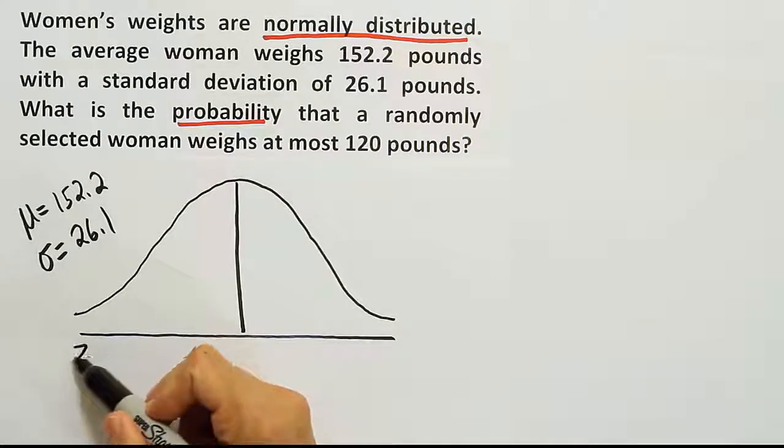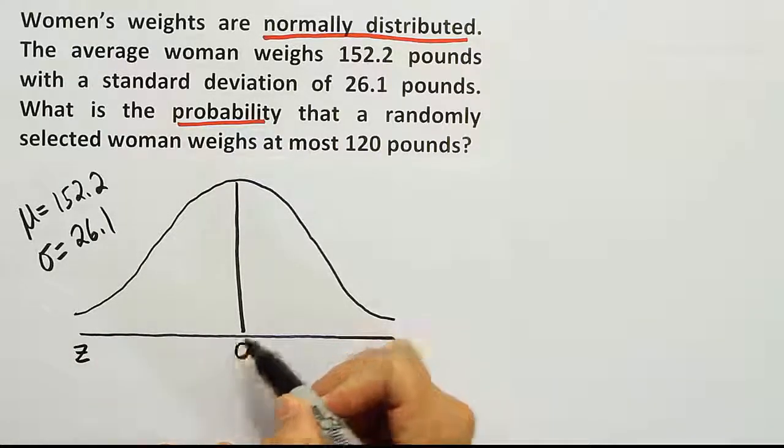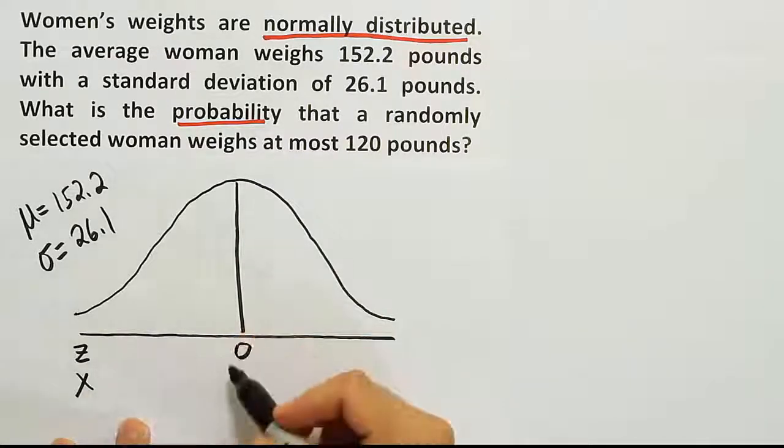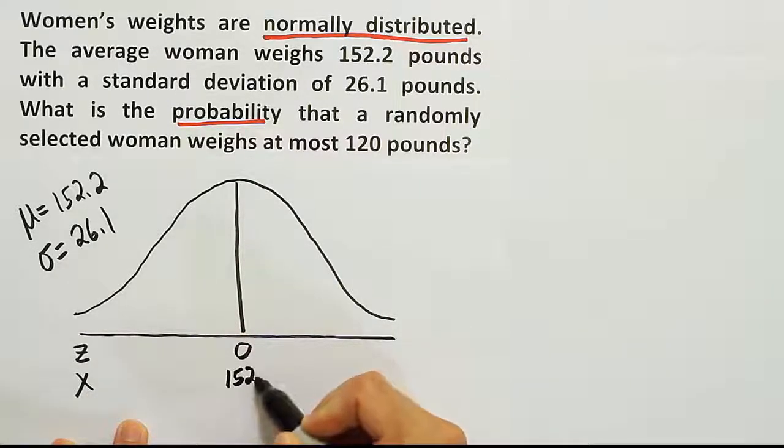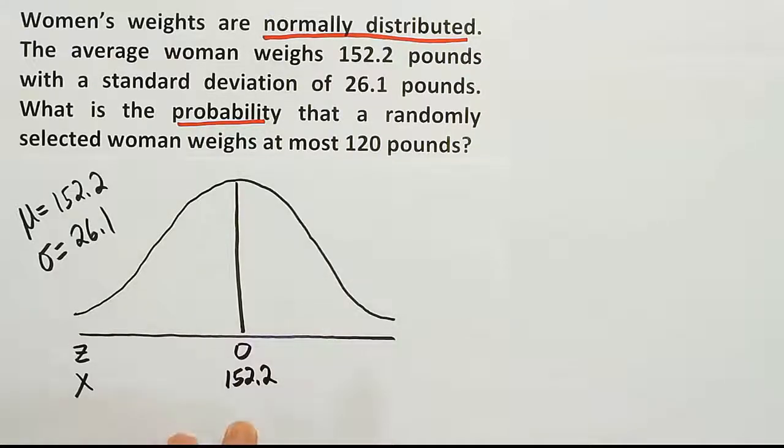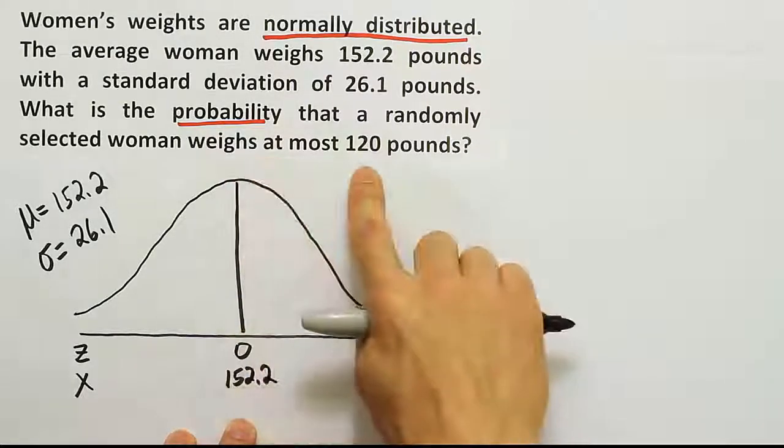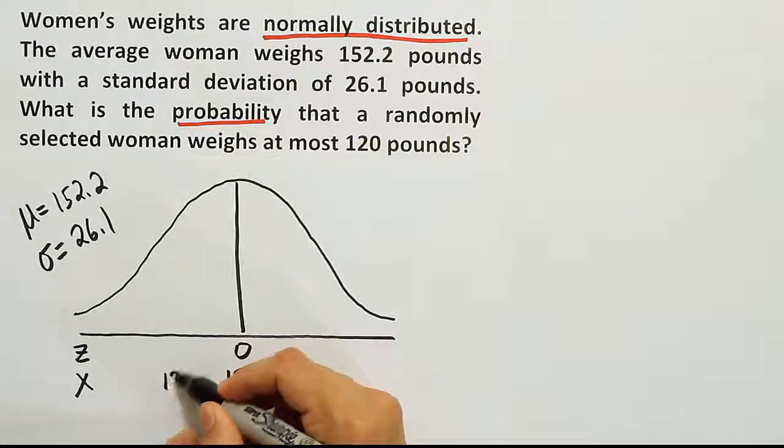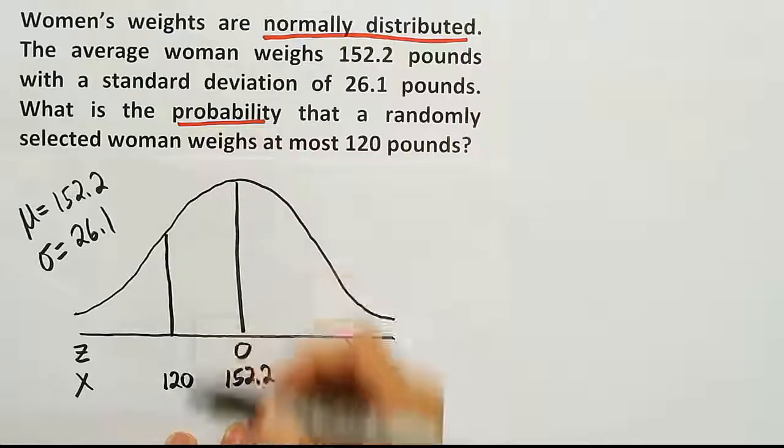The standard deviation is 26.1 pounds. The z-axis here is centered at zero. The x-axis represents women's weights, with average weight 152.2. They're asking for the probability that a woman weighs at most 120. 120 is to the left of 152, so I'll put that on the left here and draw my line.